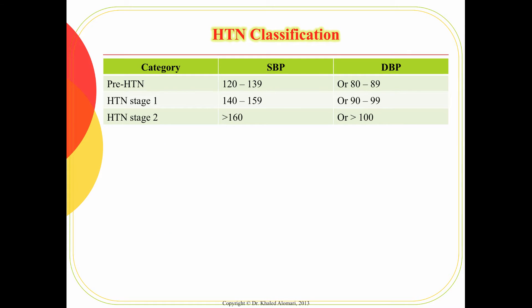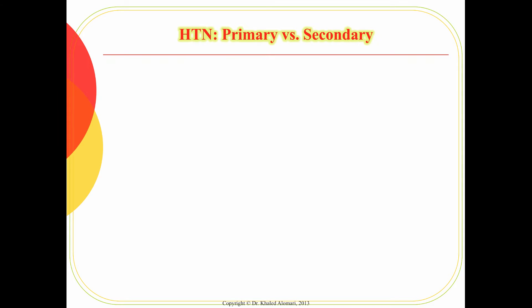There are two main categories as far as numbers. Normal blood pressure is 120 over 80. From 130 to 139 is called prehypertension, or if the diastolic is between 80 to 89. Stage 1 is 90 to 99 diastolic. Stage 2 is whenever the systolic is equal to or higher than 160, or the diastolic is equal to or higher than 100.